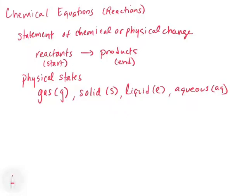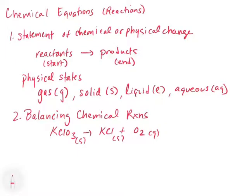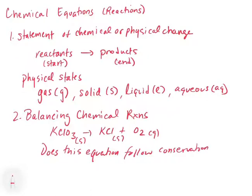The next important thing is that chemical reactions must be balanced. For example, if we write KClO3(s) → KCl(s) + O2(g), we have to ask: does this equation follow conservation of mass?